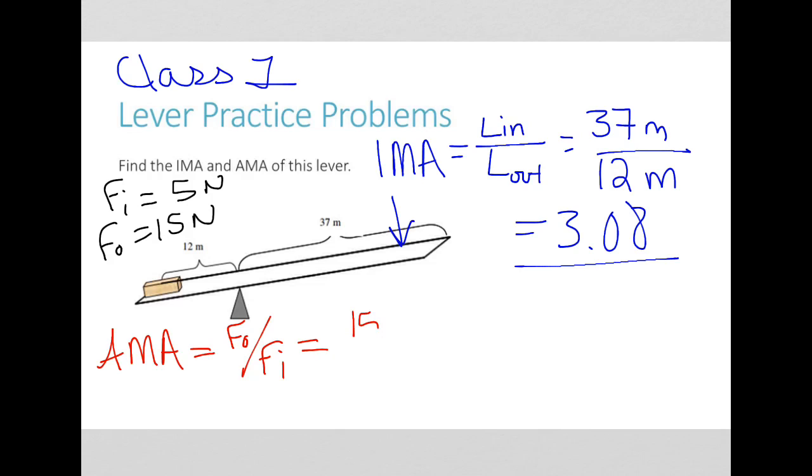So 15 newtons divided by 5 newtons equals 3. The actual mechanical advantage is a little bit smaller than the ideal mechanical advantage, which makes sense.